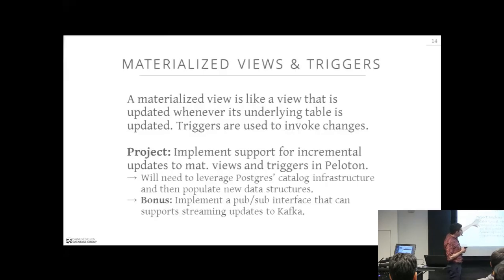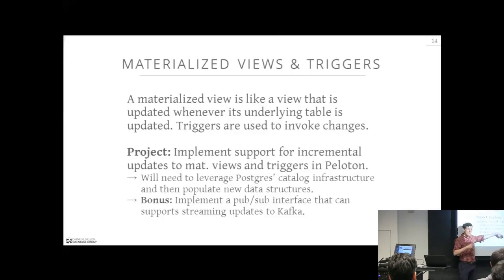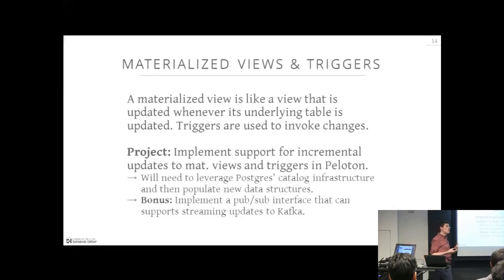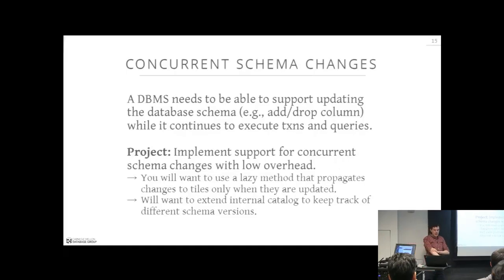A bonus idea would be: once you have triggers, you can implement a Pub-Sub interface that allows the database system to stream updates out to a message broker or message queue like Kafka. Think of something like a front-end OLTP database system running Peloton — you insert new tuples, and a Pub-Sub interface fires off a trigger that publishes updates out to Kafka downstream. That's a very common architecture in large-scale applications. It would also cause you to become familiar with not only Postgres's catalogs and how to implement triggers, but also another system widely used in industry.